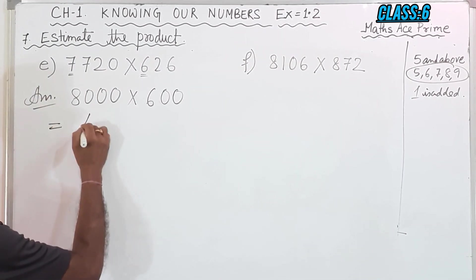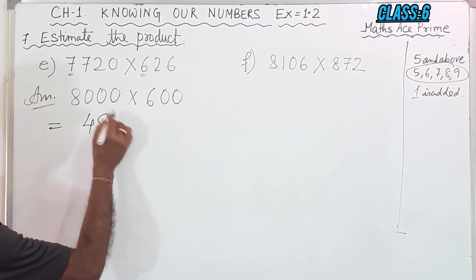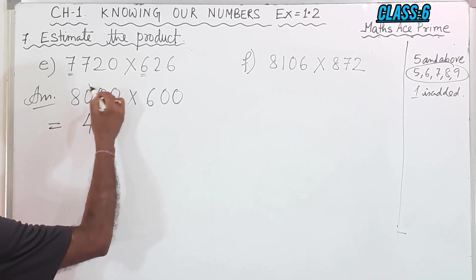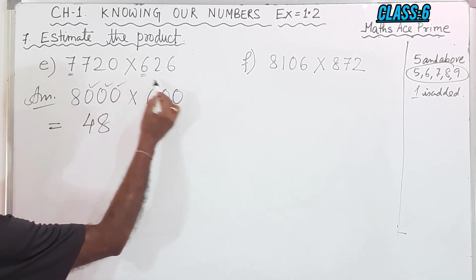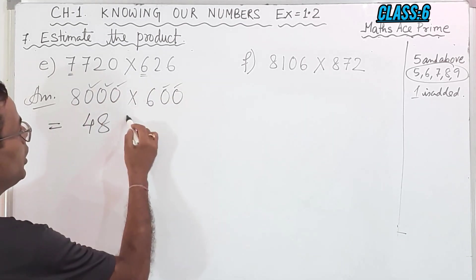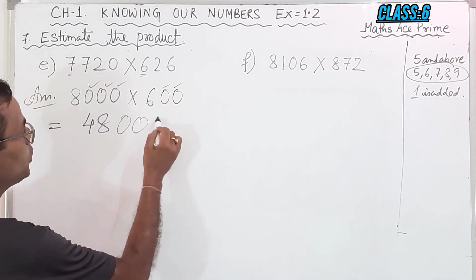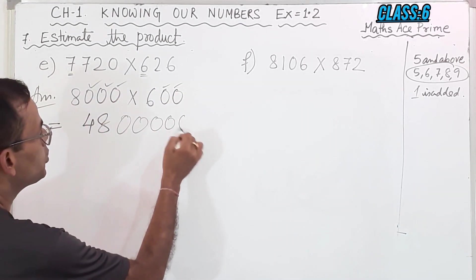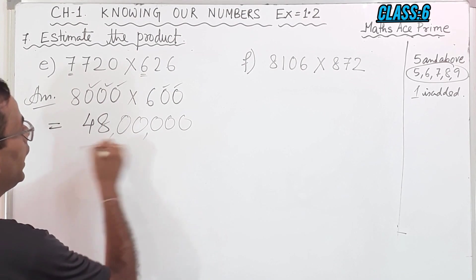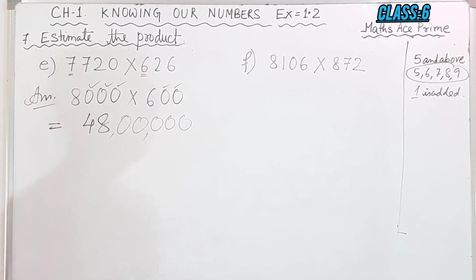Now we will multiply: 8 and 6 are 48. How many zeros are there? 1, 2, 3, 4, 5 — five zeros. So we write 48 followed by 5 zeros, and we got the answer: 4,800,000.